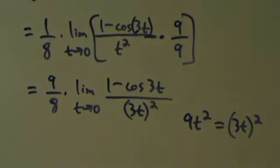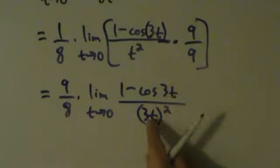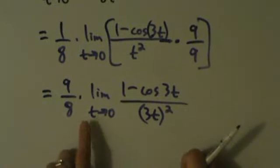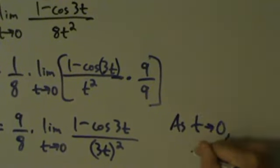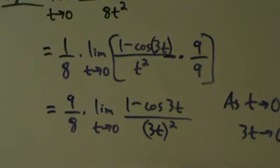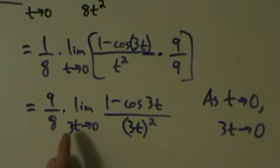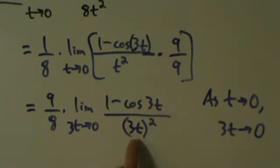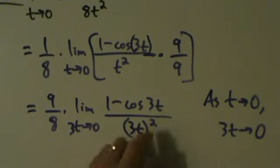Now we're almost there. We have 3t in the cosine, and the quantity 3t squared in the denominator. All we need is for the bottom variable to match, and it does — as t approaches 0, 3t also approaches 0, since 3 times 0 is 0. Now we have 3t, 3t, and the quantity 3t squared — a thing, that same thing in the cosine, and that thing squared. Just like example 6 had x, x, and x squared.